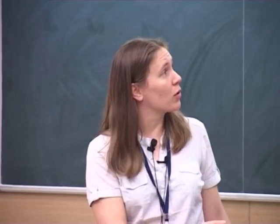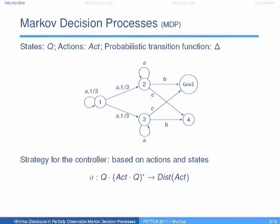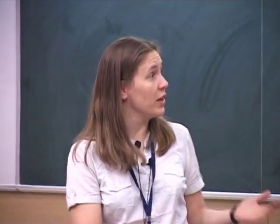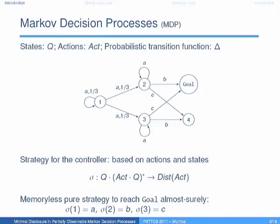Given a sequence of alternating states and actions, the controller can choose a distribution over possible enabled actions. We are interested in reachability objectives — specifically, strategies that ensure reaching a goal almost surely, with probability one. In this particular example, there is a very simple strategy to reach the goal states almost surely. It's memoryless, so it does not depend on the whole history but only on the current state. And it's pure, so the decision is deterministic — you choose action A in state one, B in state two, and C in state three, and you reach the goal almost surely.